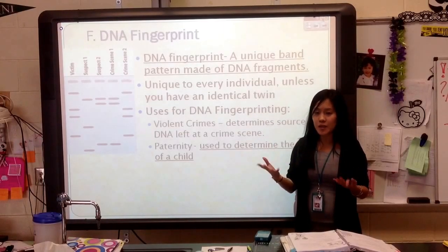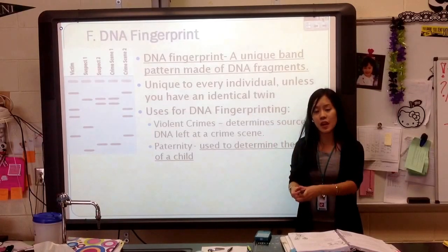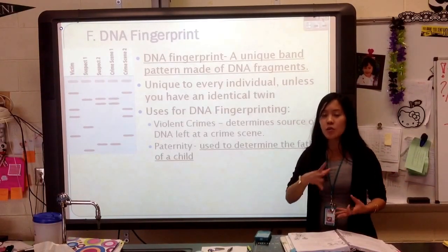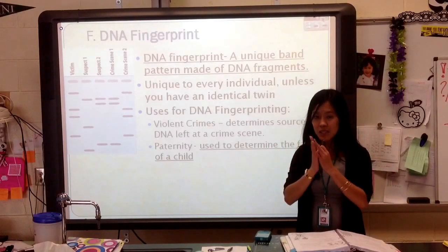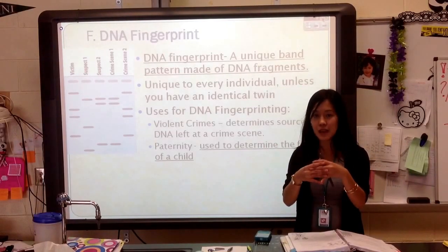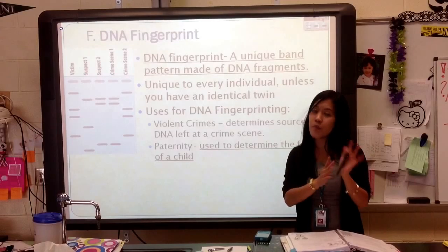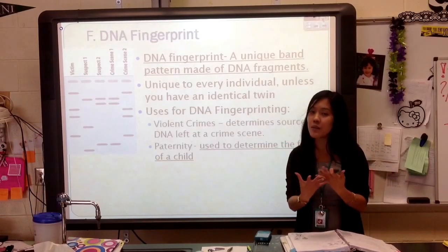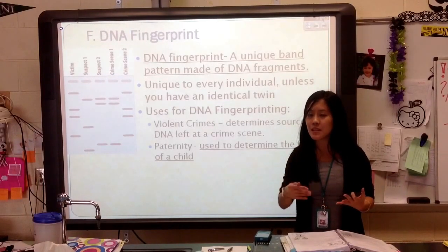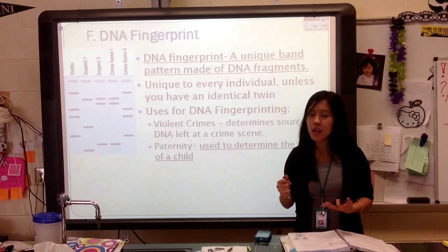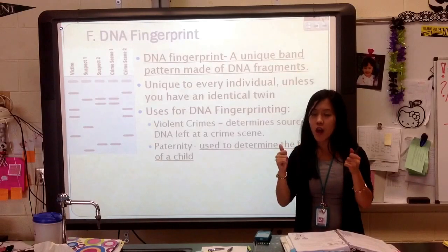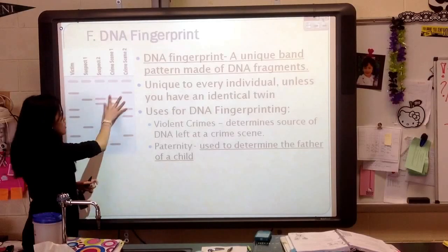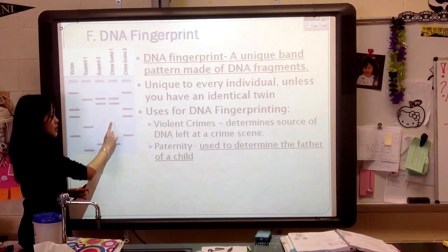A DNA fingerprint is when we take a sample of DNA — from a person, from a crime scene, or from a blood sample — we get the DNA, we use some enzymes and tools to cut up that DNA, and we cut it in a certain sequence. Once we cut up the DNA, we'll insert it into a machine, and the machine will be turned on. What happens is the different sections of DNA that have been cut will actually move down and form a banding pattern.